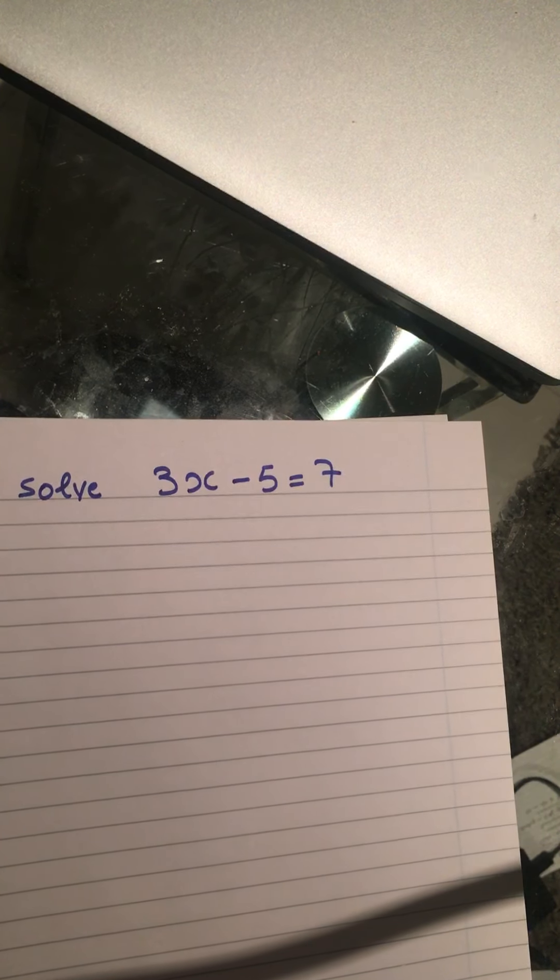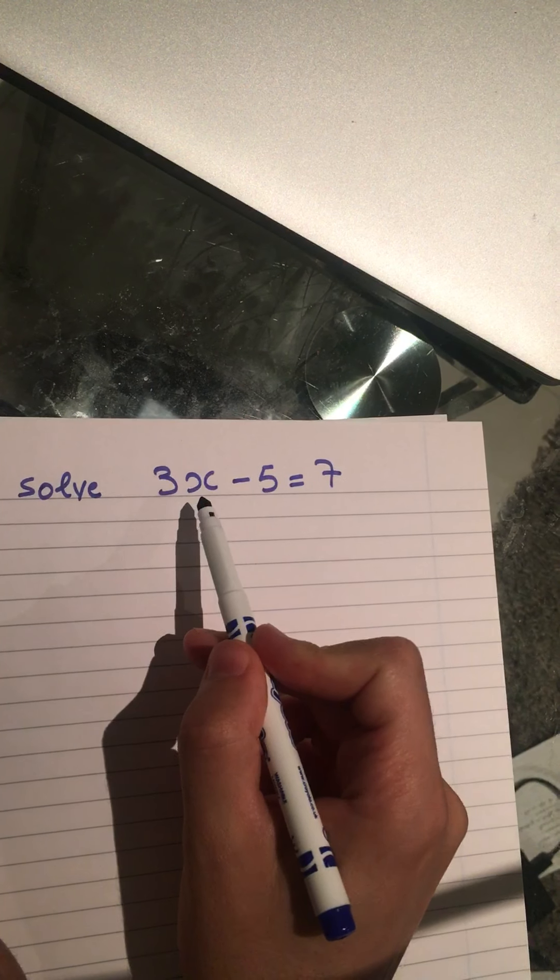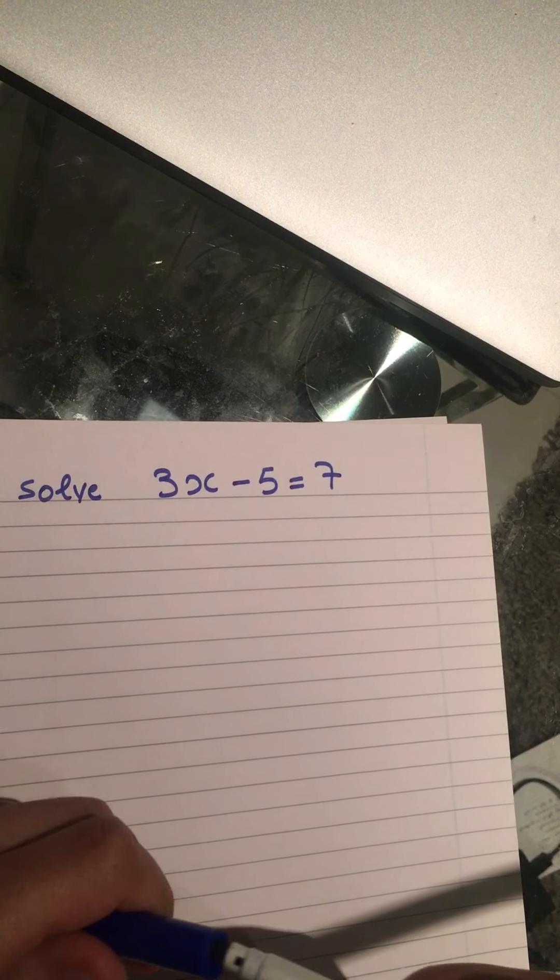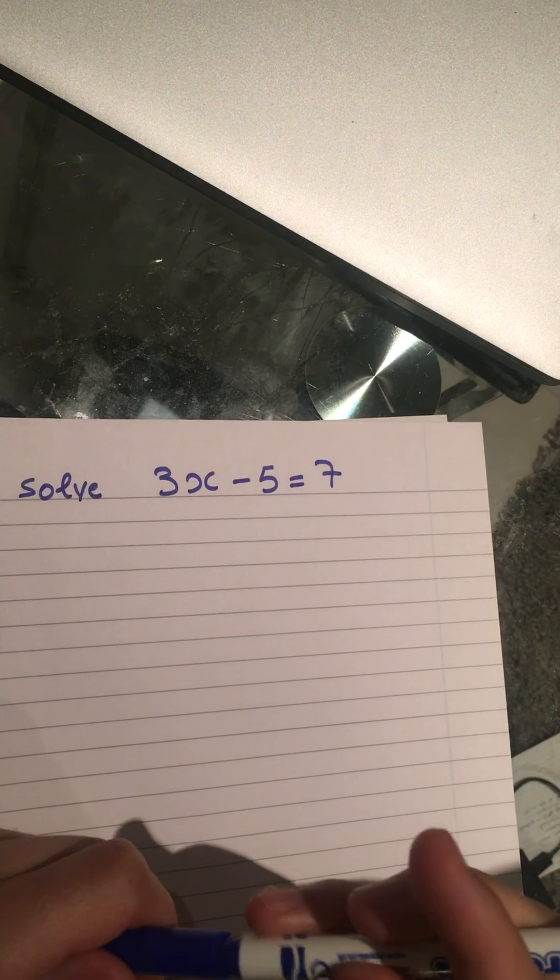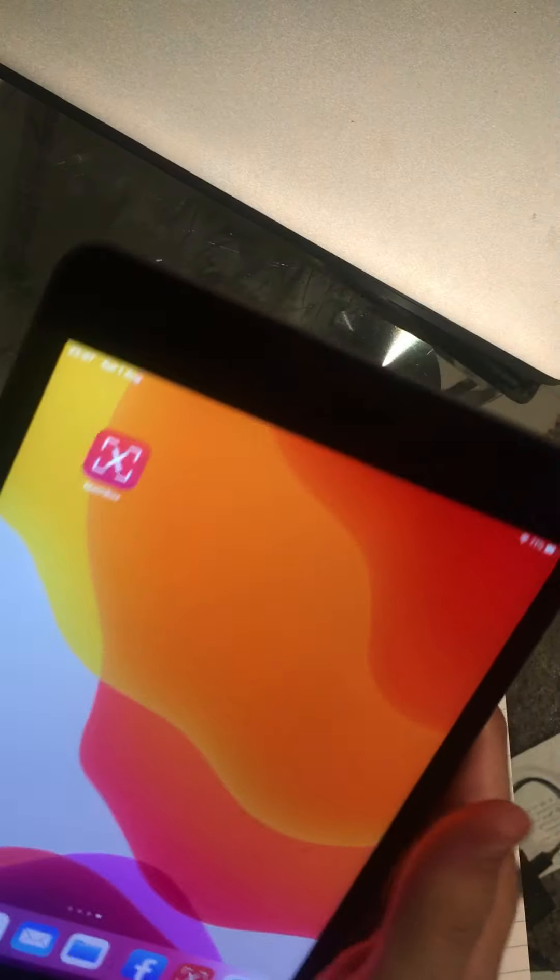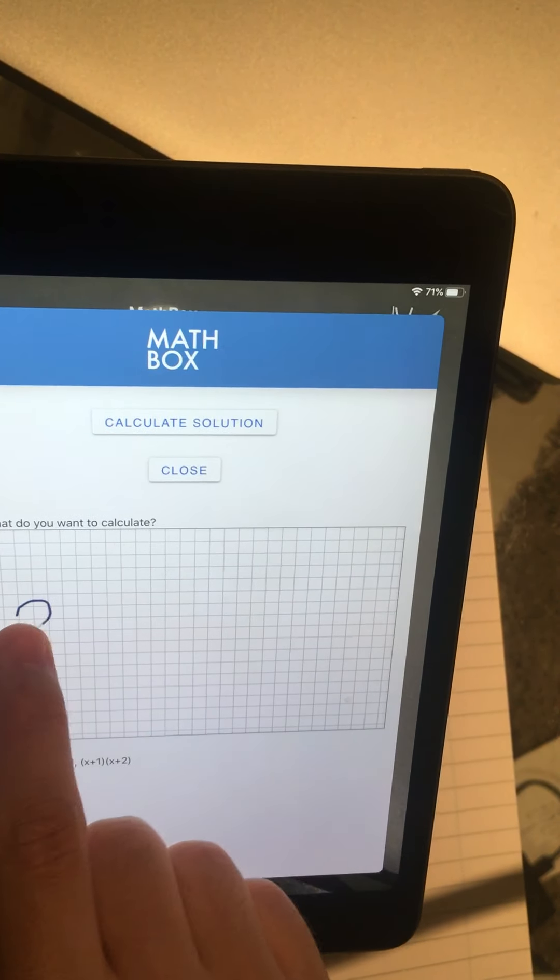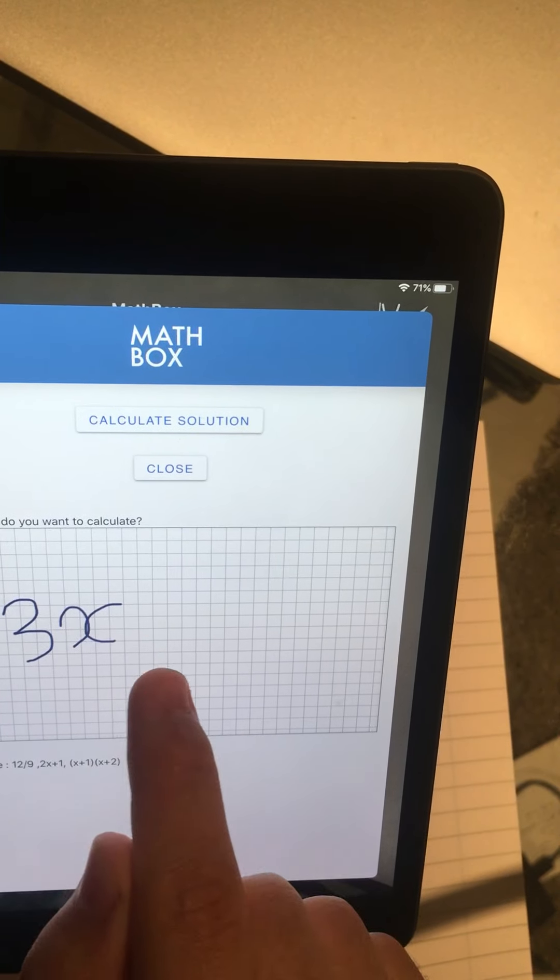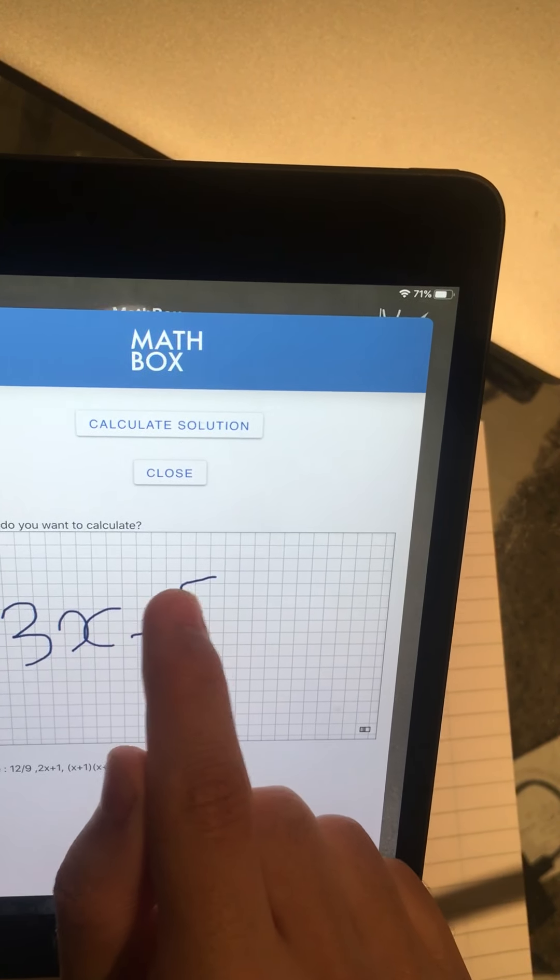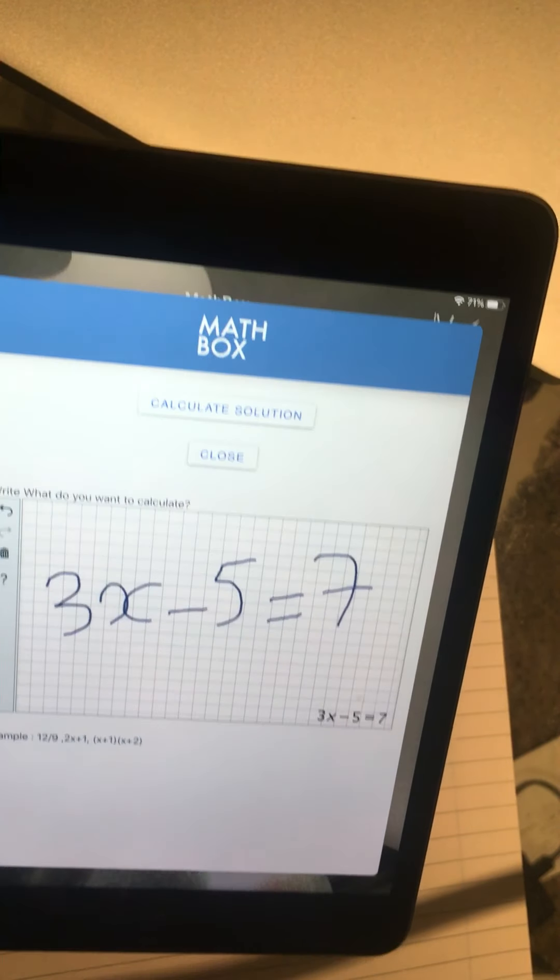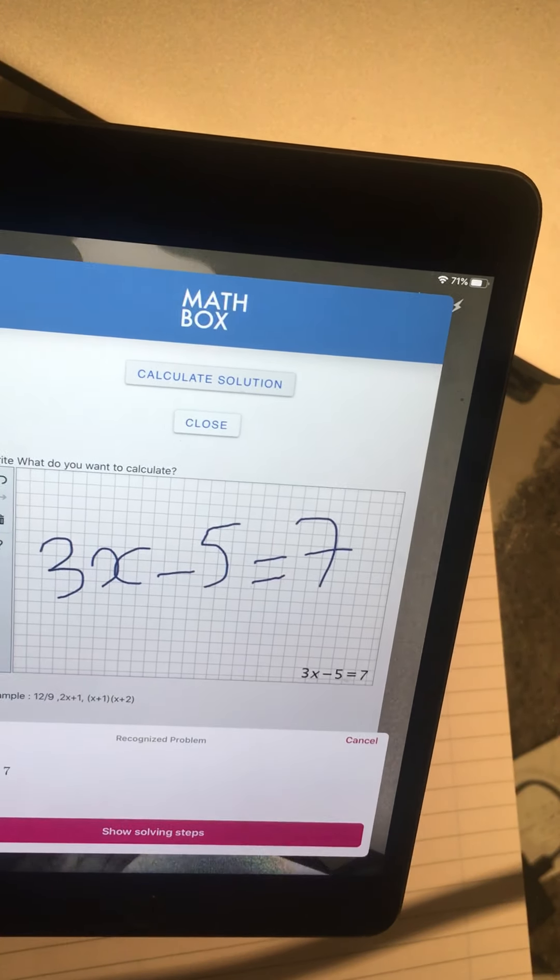Okay, today we will solve 3x minus 5 equals 7, and for that we will use our app called Matbox. Here, I can write down 3x minus 5 equals 7 and check the results.